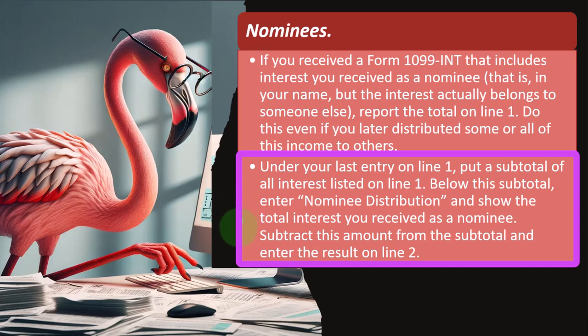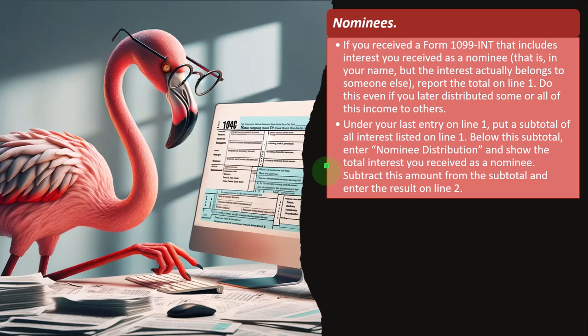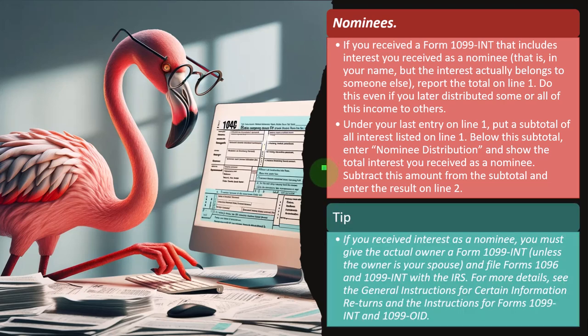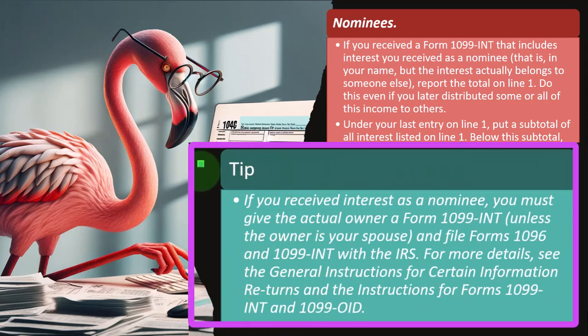Enter the result on line 2. In other words, you have to list the amount — because if you don't, the IRS will almost surely flag it on their end. So you list the amount, then subtract it out. That way you can show what's on the 1099 so the IRS can see it, and you can explain why you shouldn't have to pay taxes on it, reducing it back down and assigning it to whoever should be responsible. Unless the owner is your spouse, file Forms 1096 and 1099-INT with the IRS. For more details, see the General Instructions for Certain Information Returns and the Instructions for Form 1099-INT and 1099-OID.